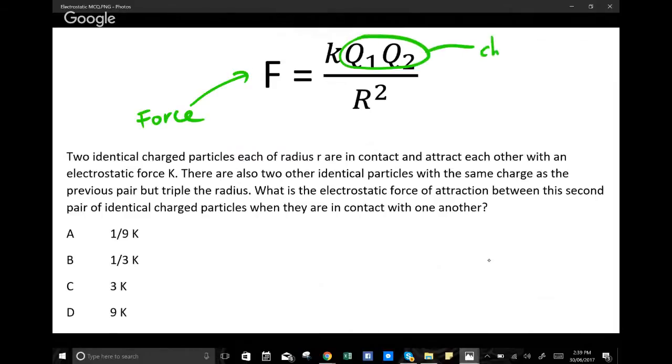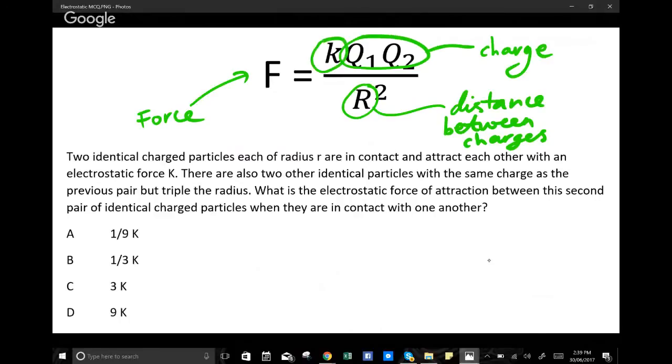That's force, Q is for charge, and R is the distance between the charges. K is just some constant. Again, these will usually be explained to you in the question stem. So we've got two identically charged particles, each of radius R, and they're in contact and attract each other with an electrostatic force K.